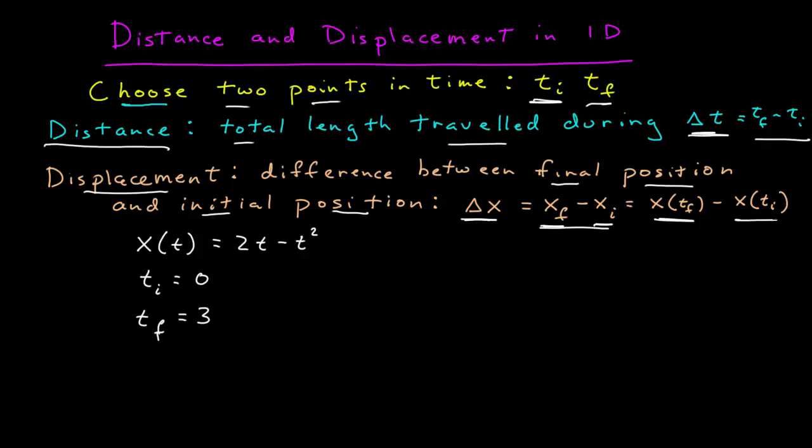I think the easiest way really to distinguish these is to do a simple example. Here I have a position function in time, x of t, times seconds, x is in meters. And here I've chosen two specific points in time. My initial time I'll call zero, my final time I'll call three.